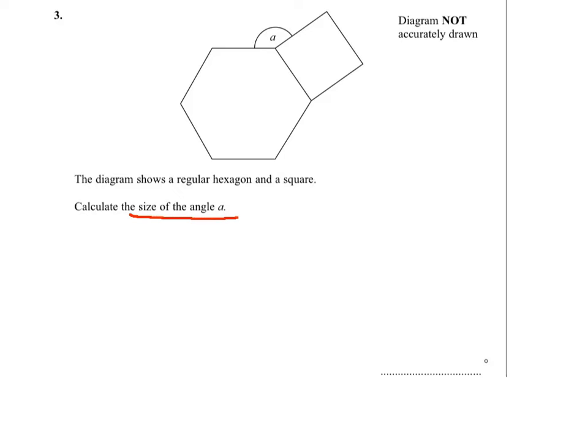Question 3, we need to work out the size of angle A. We know that angles at a point add up to 360, so A plus the interior angle of the hexagon plus 90 degrees because it's a square will equal 360.